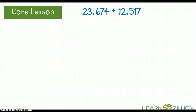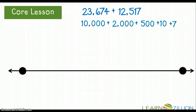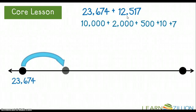So if we have 23,674 plus 12,517, we've already broken that second number down into expanded form. When I use my open number line to add two numbers together, I'm going to start with my largest number. Since 23,674 is larger than 12,517, I'm going to start with that number on my number line and then jump along it adding the different values that have been broken down from 12,517.